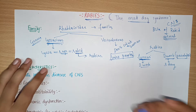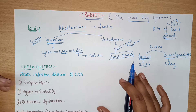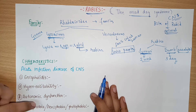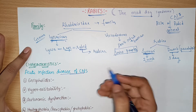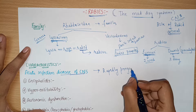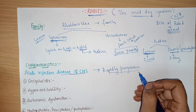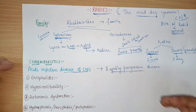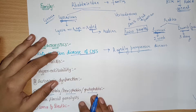The symptoms you can see in an affected person include encephalitis, hyperexcitability, and autonomic dysfunction. The person presents with hydrophobia, aerophobia, and photophobia, as well as acute flaccid paralysis. The final outcome of this disease is coma and death. Rabies is an acute infectious disease of the CNS and a rapidly progressive disease — once a person is affected, the disease aggravates within two weeks.